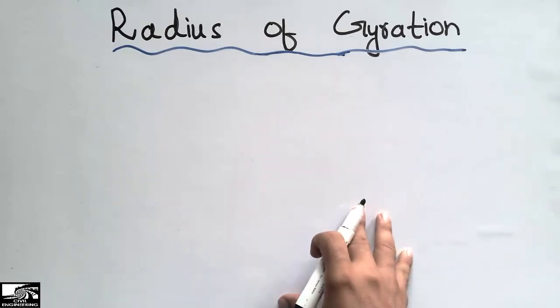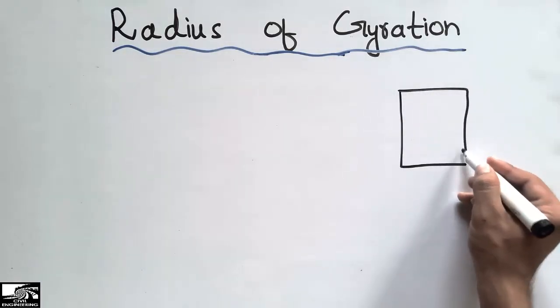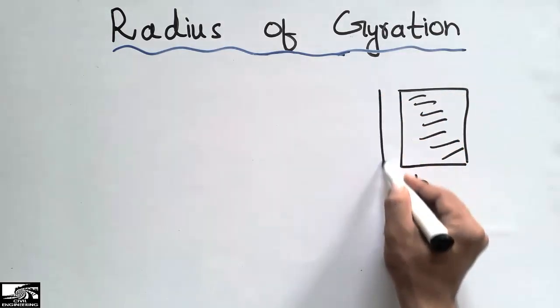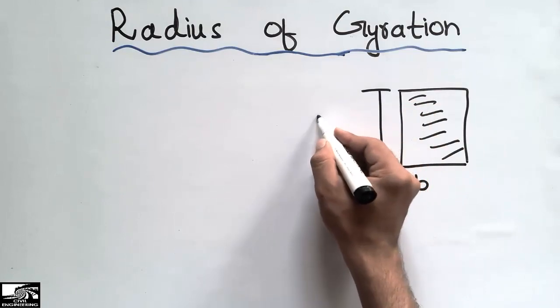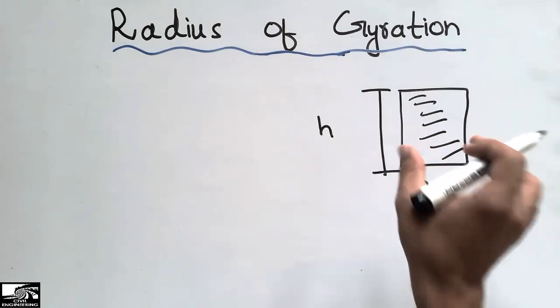Consider a rectangular section of an object having width B and depth or height equal to H.